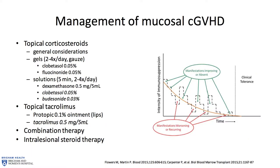As far as management goes, our mainstay — unless we absolutely need systemic therapy — is primarily topical corticosteroids. Chronic graft-versus-host disease can be treated with steroids. The skin is often treated with steroids, the eyes can use topical steroids, and the mouth responds very well to topical steroids as well.